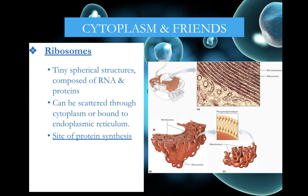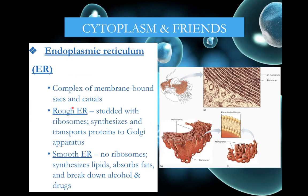Ribosomes can be found out in the cytoplasm on their own or studded in the rough endoplasmic reticulum — the presence of ribosomes is what makes the ER rough. The endoplasmic reticulum, or ER, consists of membrane-bound sacs. The rough ER is where protein synthesis occurs. The smooth ER has no ribosomes, so instead it produces things like lipids and also helps to break down certain substances like alcohols and drugs.